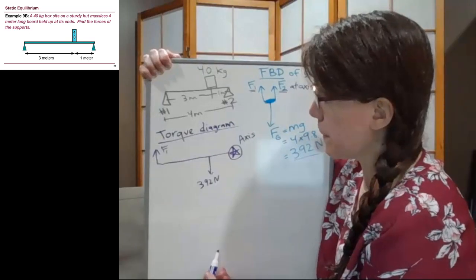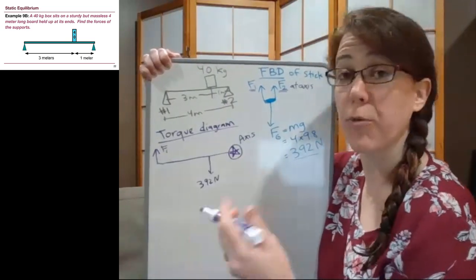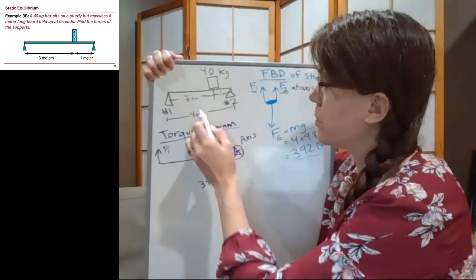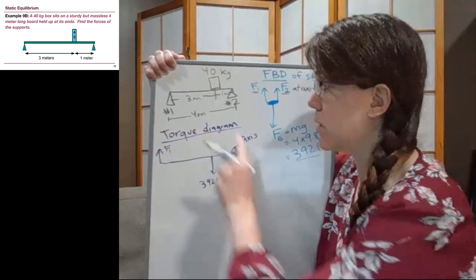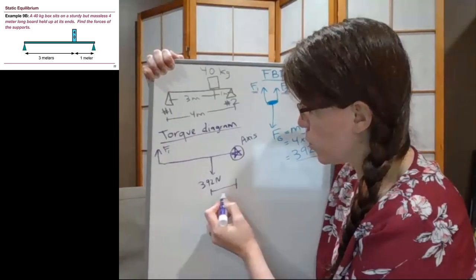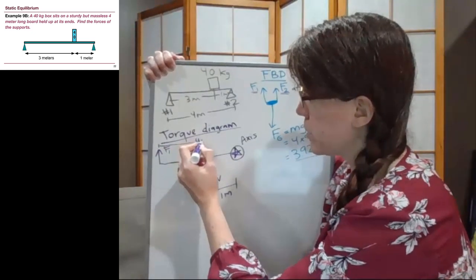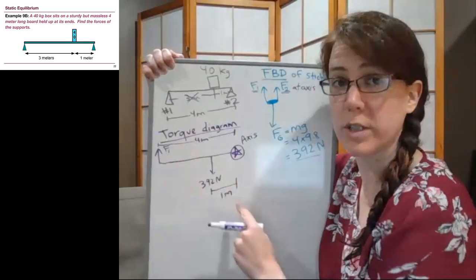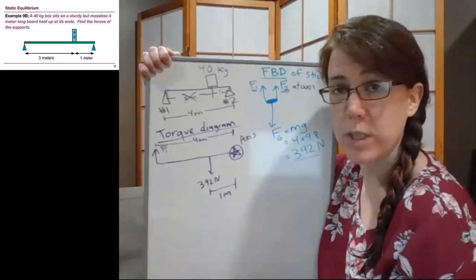Our torque diagram now has two forces. Step four is the distances, always relative to the axis. Out of the three distances — one meter, three meters, and four meters — think about which is not useful. The 392 newton force is one meter from the axis, and the F1 force at the left end is four meters from the axis. The three meters is not useful for our torque diagram. Distances are always relative to the axis, and confusing this is the most common mistake in chapter nine.